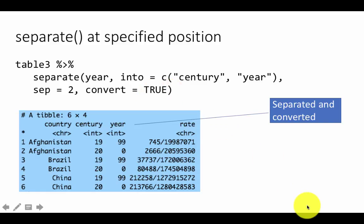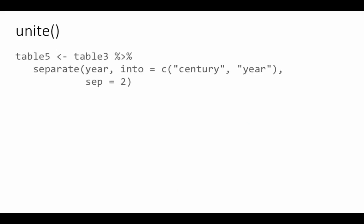Once there is an option to separate, obviously you can imagine there is also an option to unite. Let's do this example once again. We'll separate table three into century and year, but we'll store the result in another table, table five. We're saying separate year into century year, separate at the second position. But this time, we're not asking it to convert. So if you did that, you'll get back the century and the year in two separate columns, both as characters.